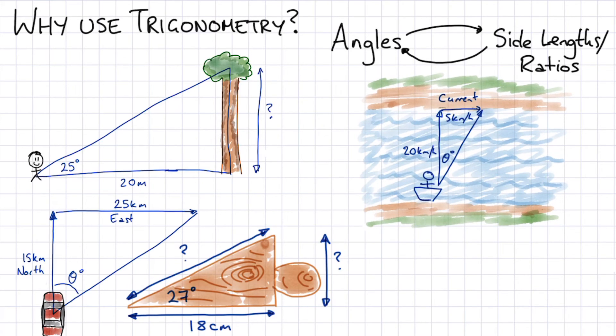The third example here is a bit more tricky but if we had a boat and we crossed a river at 20 k's per hour and there was a current pushing us downstream, what angle would we drift across the river at? That could be another useful method or application of trigonometry.